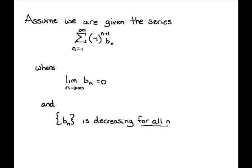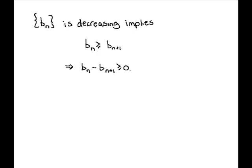If the b sub n's aren't decreasing for all n — say the first twenty-six are increasing — then I can re-index and start at n equals twenty-seven. One of our assumptions is that the sequence of b sub n's is decreasing, which implies b sub n is greater than or equal to b sub n plus one, or equivalently that b sub n minus b sub n plus one is greater than or equal to zero. This inequality is actually going to be the crux of the proof.